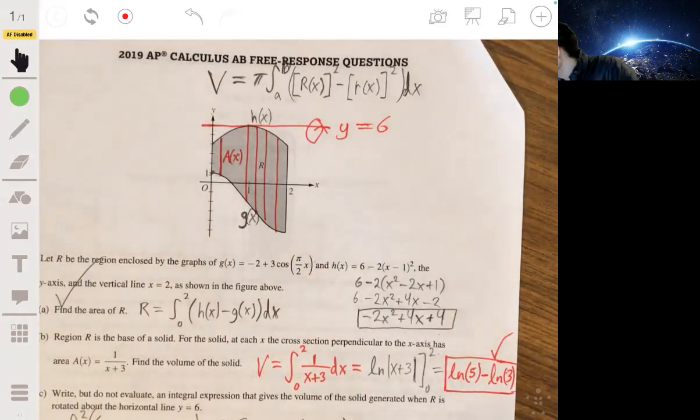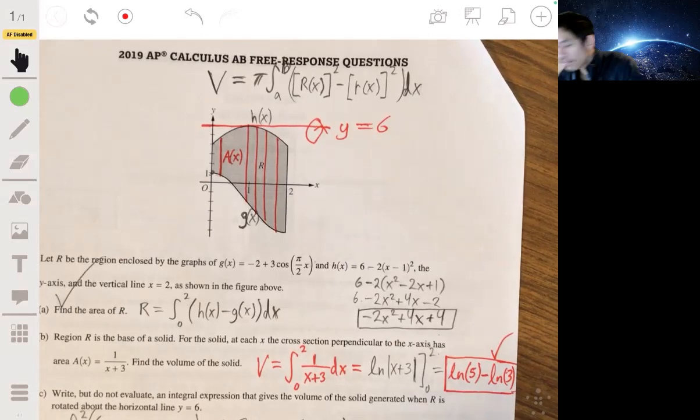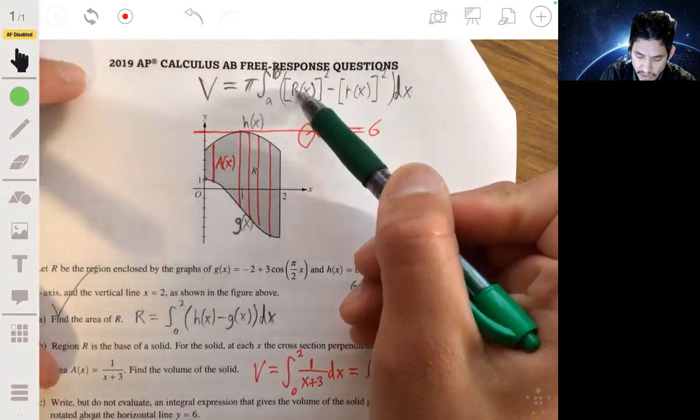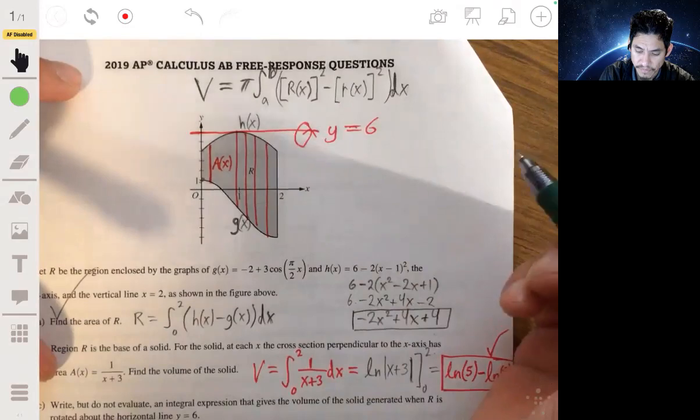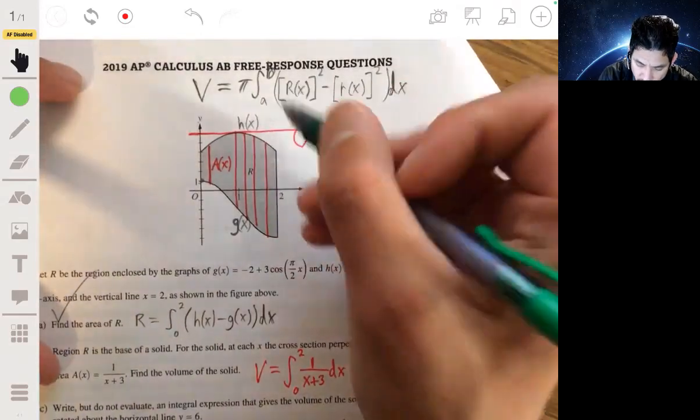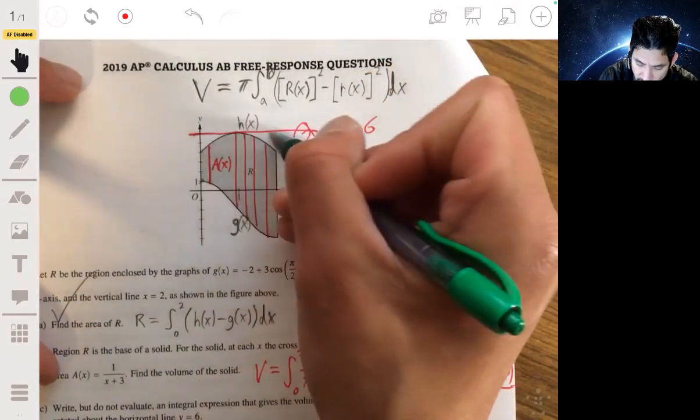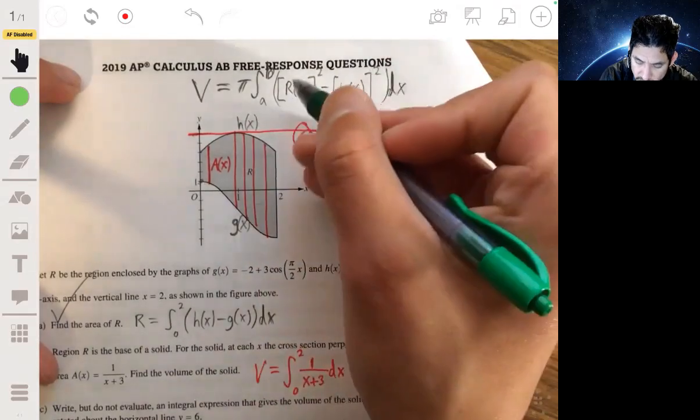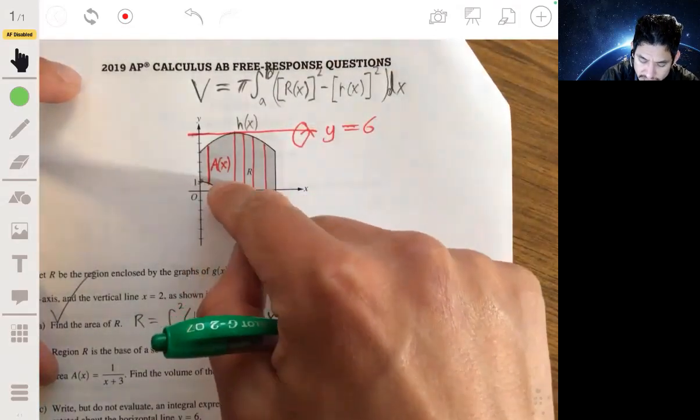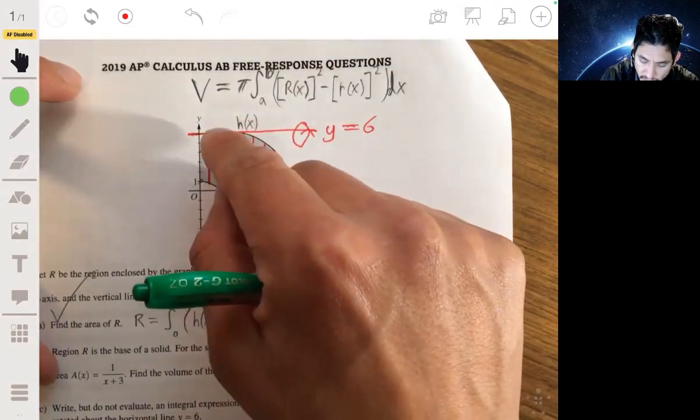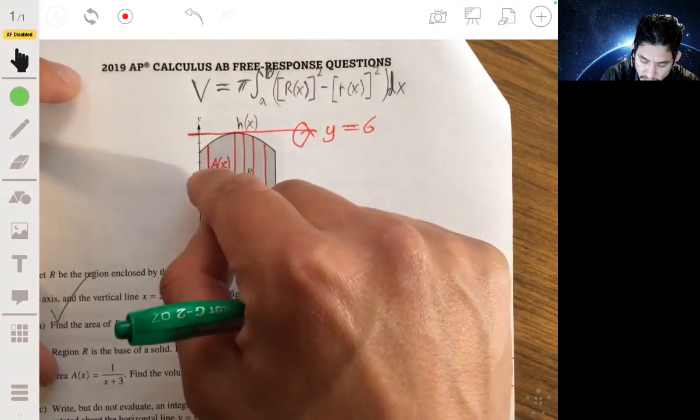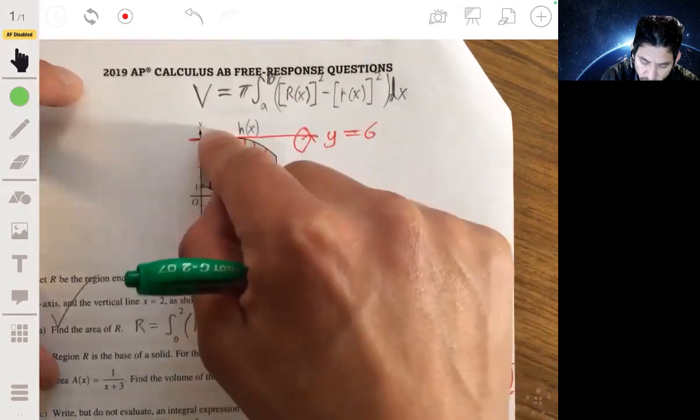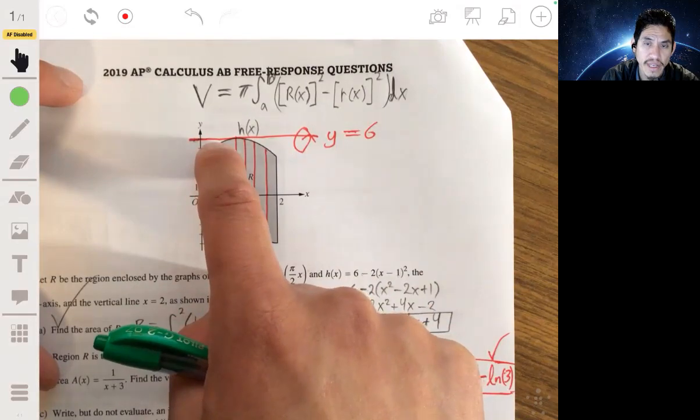Let me use some colored pens to kind of show this easier. So the key is to figure out what's the large radius and what's the small radius. Now, when you're revolving around a line or an axis, the large radius is basically...